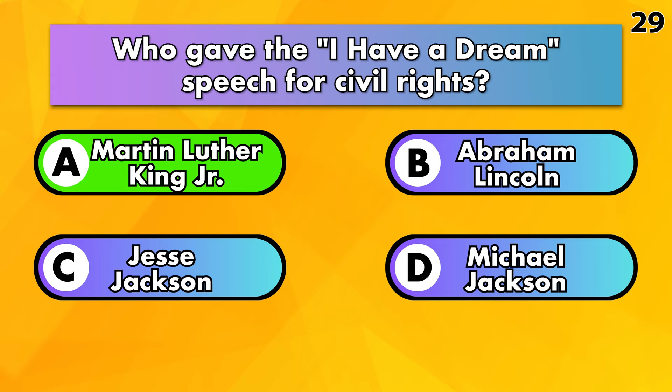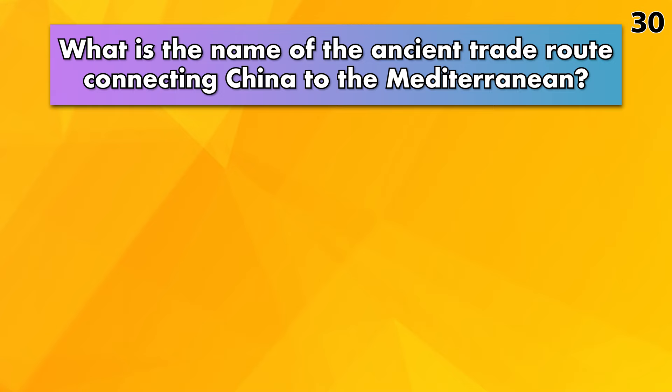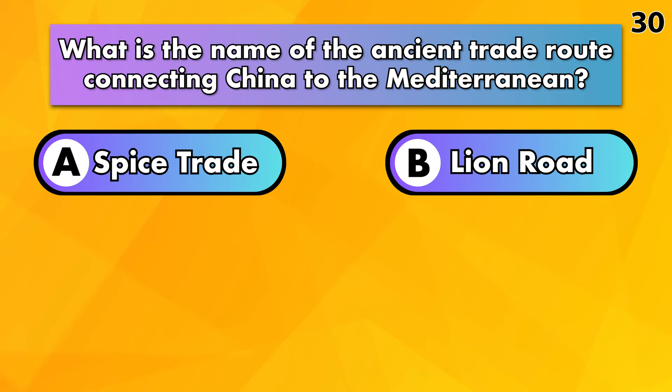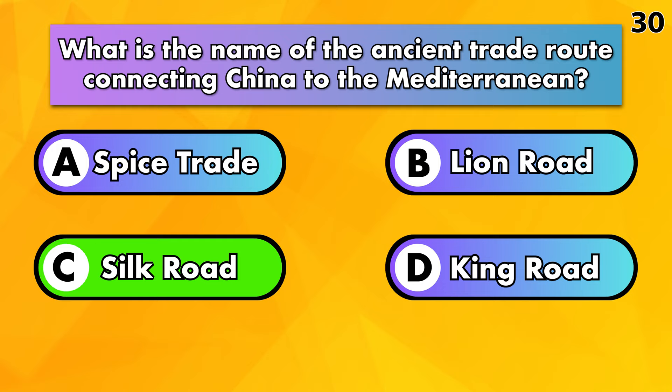What is the name of the ancient trade route connecting China to the Mediterranean? Spice Strait, Lion Road, Silk Road or King Road? It's Silk Road.